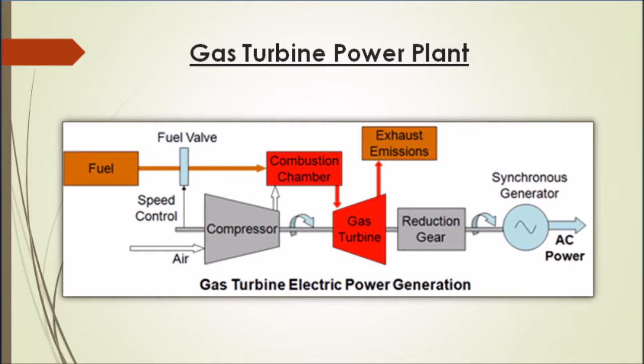We see that in the gas turbine power plant, it has a few important components which are the compressor, the gas turbine, and the synchronous generator. There is a fuel valve to control the speed, a tunnel for air to flow into the compressor, a chamber for compression, and also a tunnel for exhaust emission.